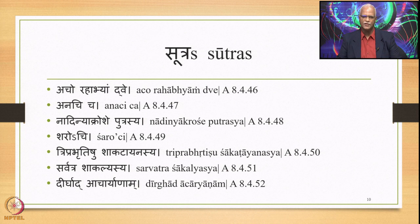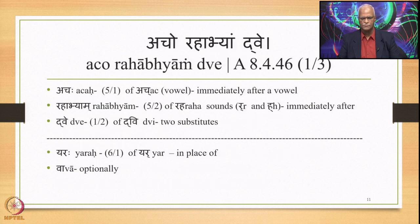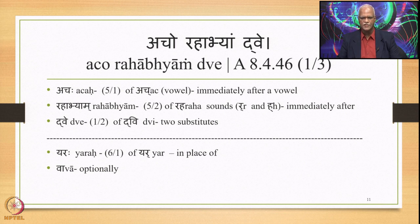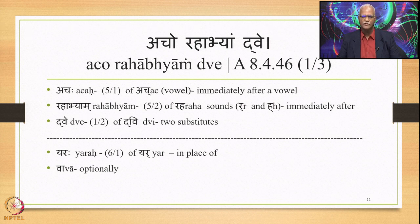Let us take up the first sutra: Achorahabhyam Dve, 8.446. This sutra has three padas: Achaha, Rahabhyam, and Dve. Achaha is the 5th/1st of Ach — Ach is a vowel — so Achaha means immediately after a vowel. Rahabhyam is 5th/2nd of Rah, referring to sounds R and H, meaning immediately after R and H. Dve is 1st/2nd of Dvi, meaning two substitutes.